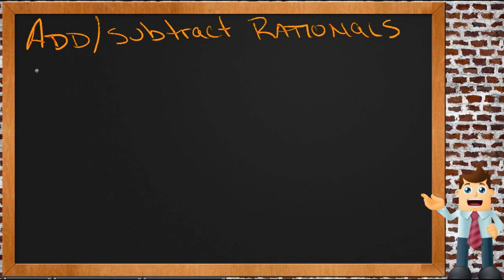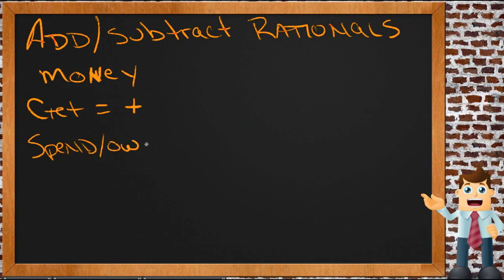One is from a conceptual standpoint, just think of adding and subtracting rationals as dealing with money. If we think of money, we deal with positive and negative numbers all the time. When you get income or when you get money, it's a positive number, something that you're adding to the money that you have. When you spend money or when you owe money, it's a negative number, an amount of money that's taken away from what you have.